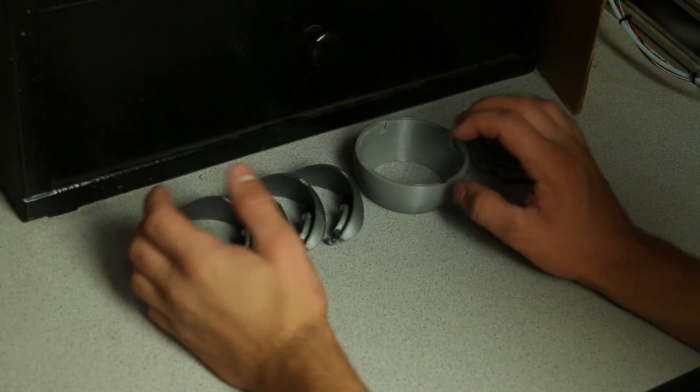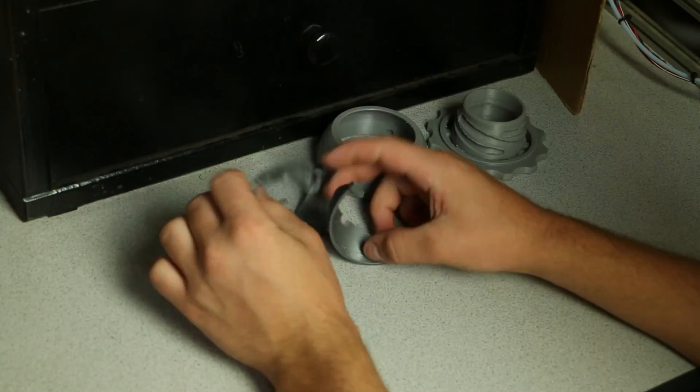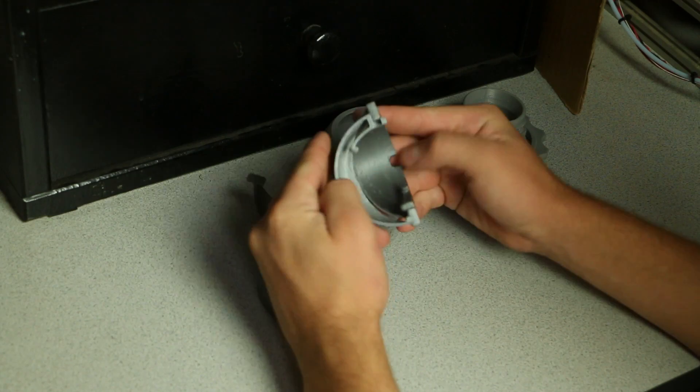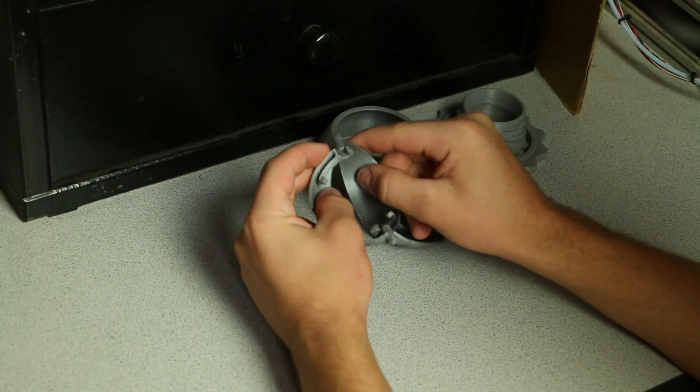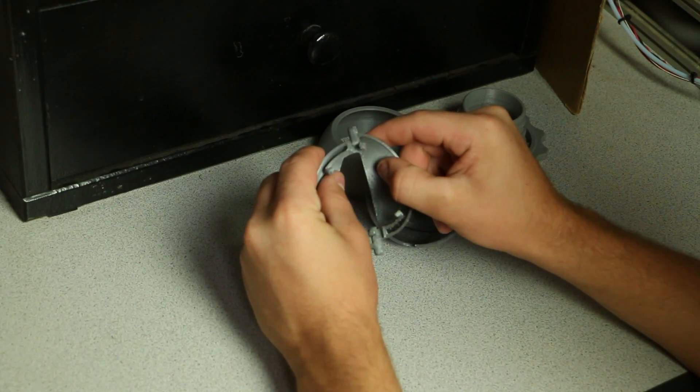Alright, so the prints have finished. Here they are, beautiful prints. Let's go ahead and put it together. These two pieces here fit together like so, then these two pieces also fit together like that. If I can get them together, there we go. So these are the outer doors and these are the inner doors.